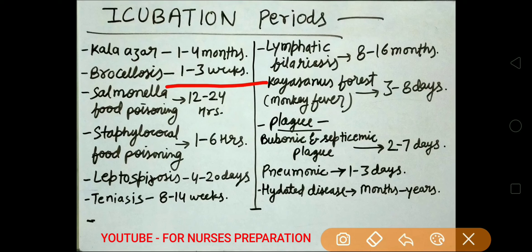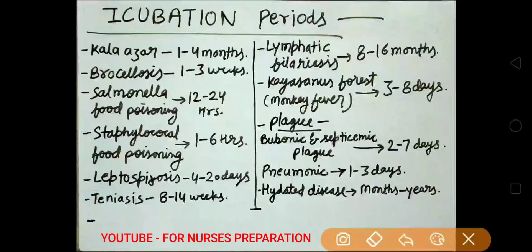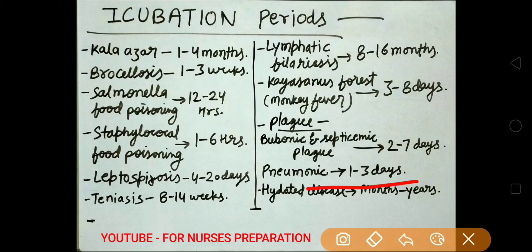Brucellosis 1 to 3 weeks. Salmonella food poisoning 12 to 24 hours. Staphylococcus food poisoning 1 to 6 hours. Leptospirosis 4 to 20 days. Tinea 8 to 14 weeks. Lymphatic filariasis 8 to 16 months. Monkey fever 3 to 8 days. Plague has 2 types: Bubonic and septicemic plague 2 to 7 days, and Pneumonic plague 1 to 3 days.